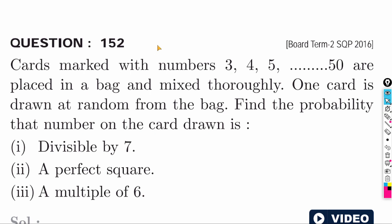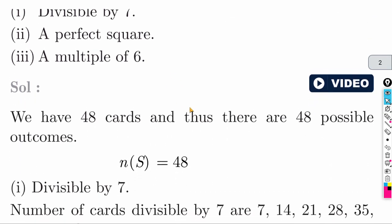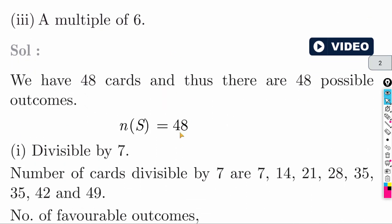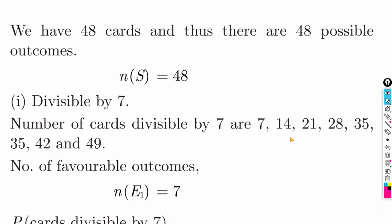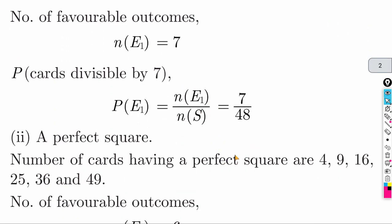Next question: cards marked with numbers 3 to 50 are placed in a bag. One card is drawn at random. Find the probability that the card drawn is divisible by 7. Numbers divisible by 7 from 3 to 50: 7, 14, 21, 28, 35, 42, 49 — that is 7 numbers. Total cards = 48. Answer is 7 by 48.